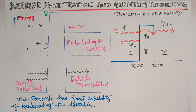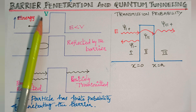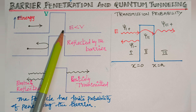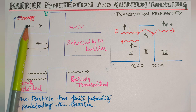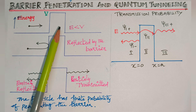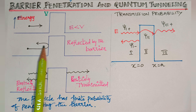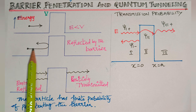Similarly, the de Broglie waves also can penetrate through the potential barrier. Looking at the first diagram, the height of the barrier is V. This is an infinite potential barrier. In classical mechanics, electrons falling on the barrier cannot penetrate through it — all of the energy is reflected back, and there is no transmission.